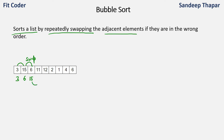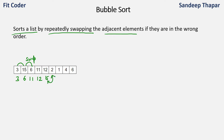Now we'll swap 15 and 11, because 11 is less than 15 so 11 should come first. So we'll have 3, 6, 11, and 15 will come instead of 11. Then we'll compare 15 and 12. Since 12 is less than 15, we'll again need to swap them. So 12 will come here and 15 will come in place of 12. Then we'll compare 15 and 2. Since 2 is less than 15, these will be swapped.